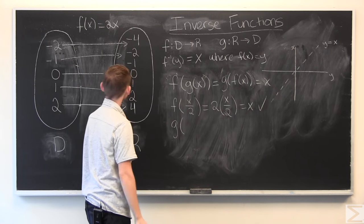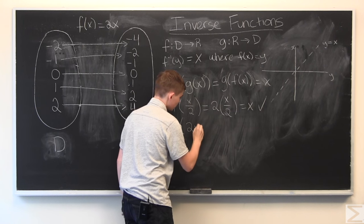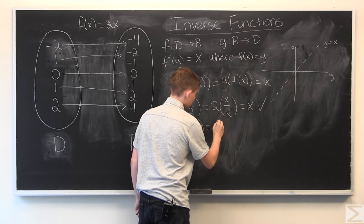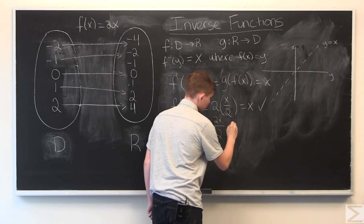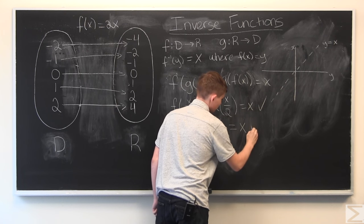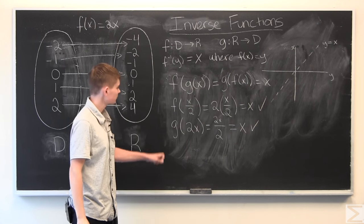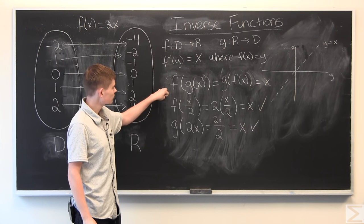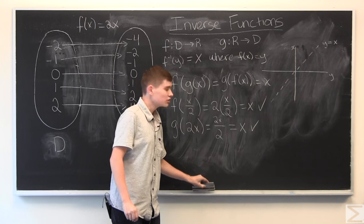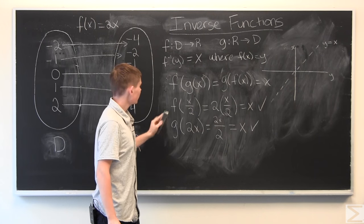G of f of x, 2x, equals 2x over 2, which is x. All right. So, we've checked that this condition is true. So, we have shown that g of x is, in fact, the inverse of f.